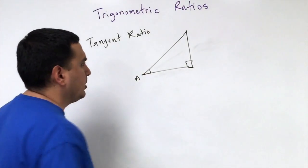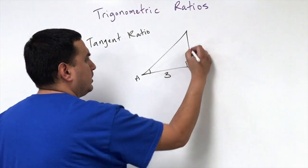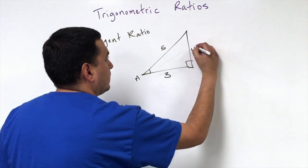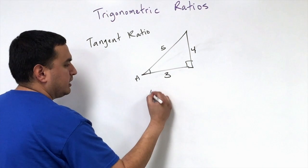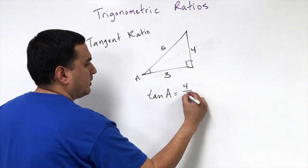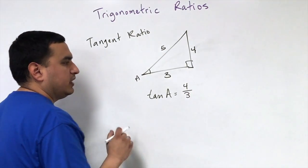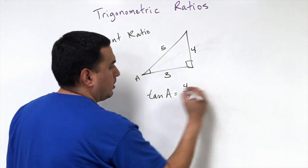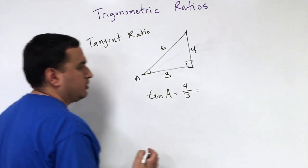If I put some numbers here, let's say this is 3, this is 4, and this is 5. Then we would say the tangent of angle A is equal to the opposite leg over the adjacent leg. Excuse me, the opposite leg over the adjacent leg. So this is going to come out to...